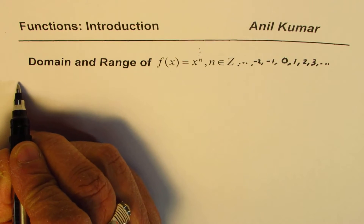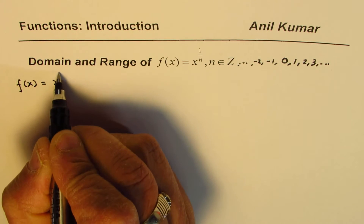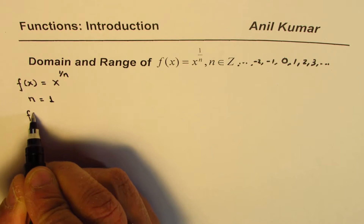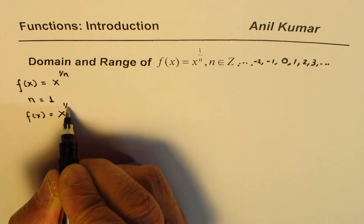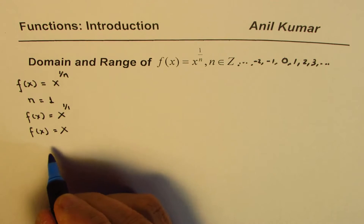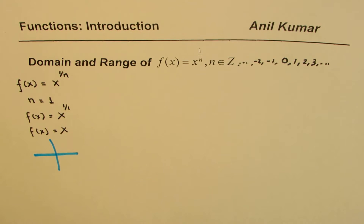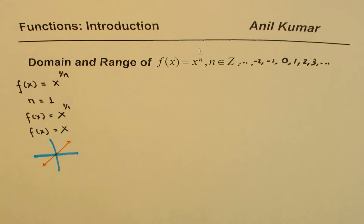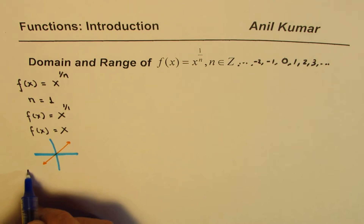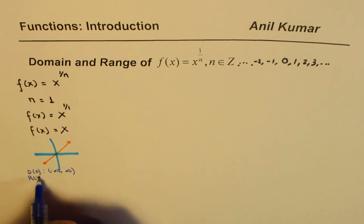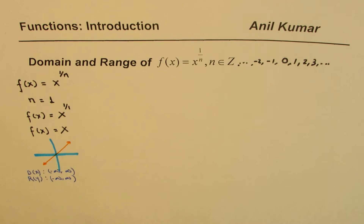Let's take an example to start with the positive numbers. If I write n = 1, the function will be f(x) = x^(1/1), which is the same as f(x) = x. This particular function is a straight line. You're very familiar with this parent function representing a straight line, and the domain and range for this function is all real numbers — from minus infinity to plus infinity.